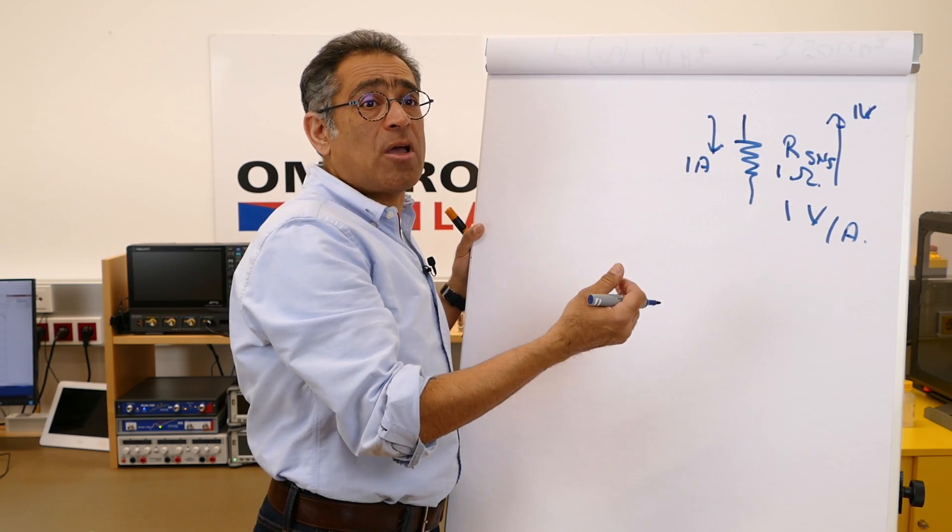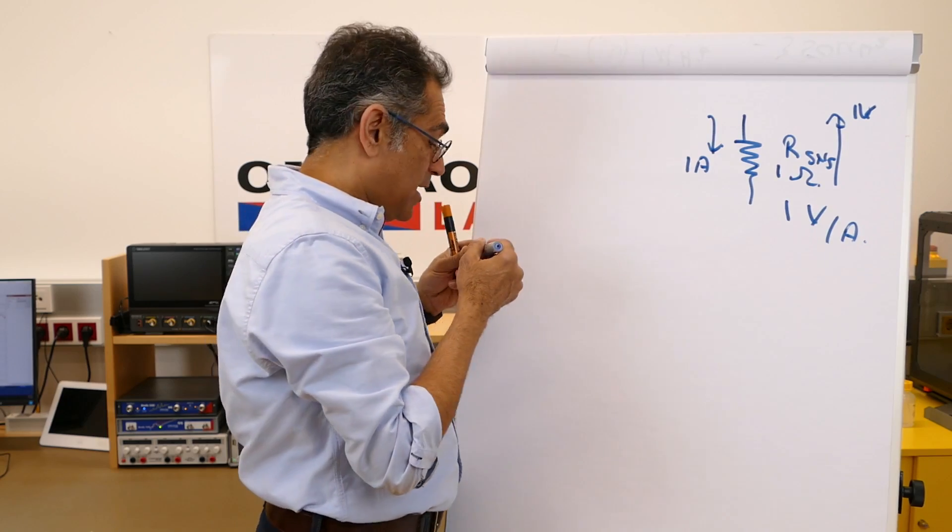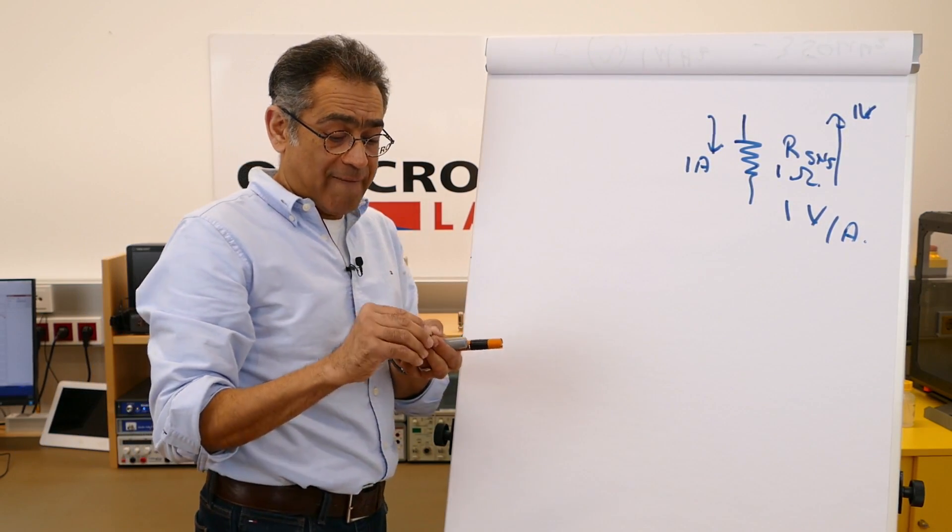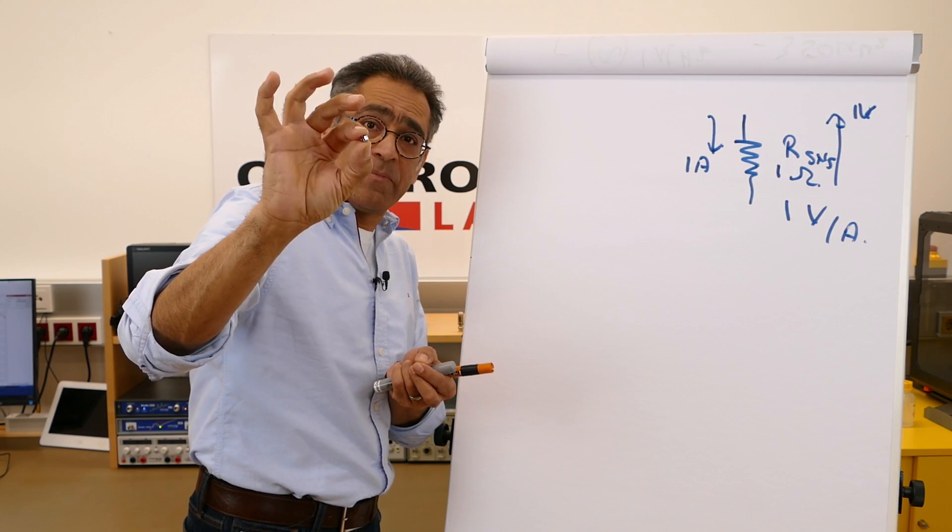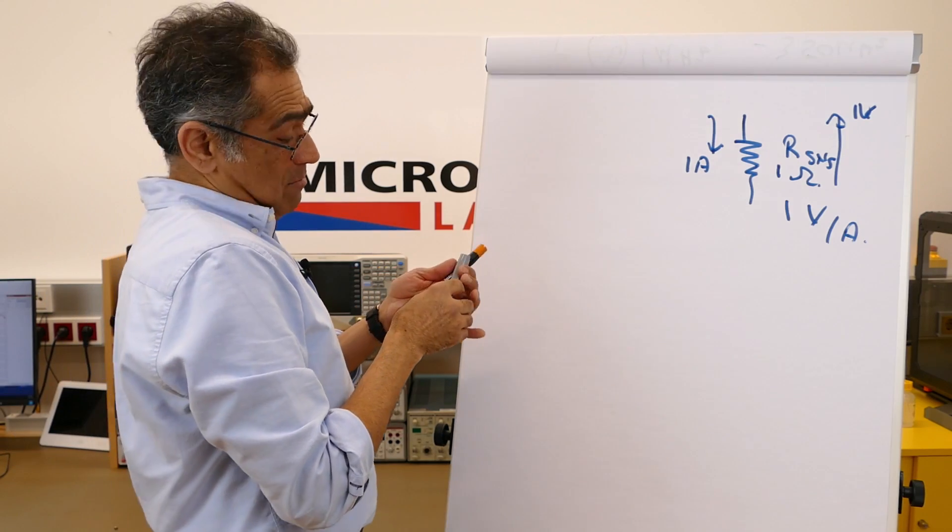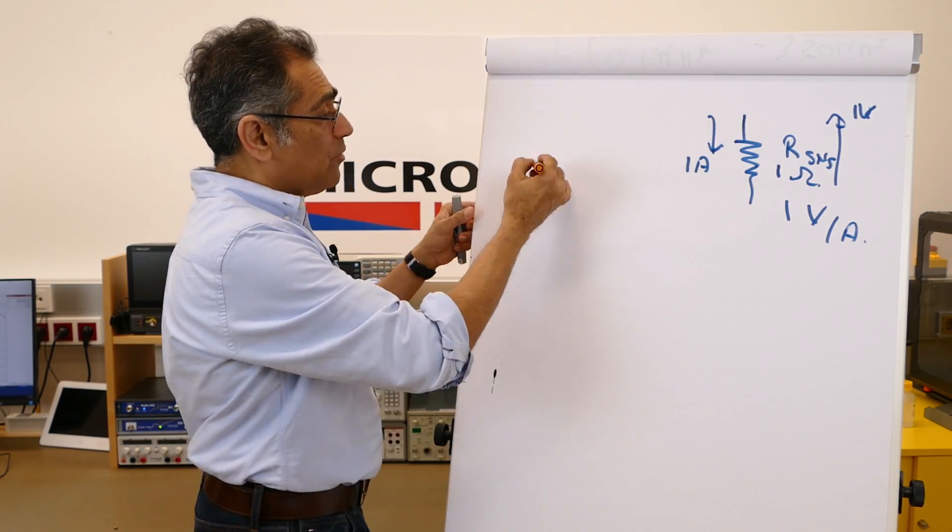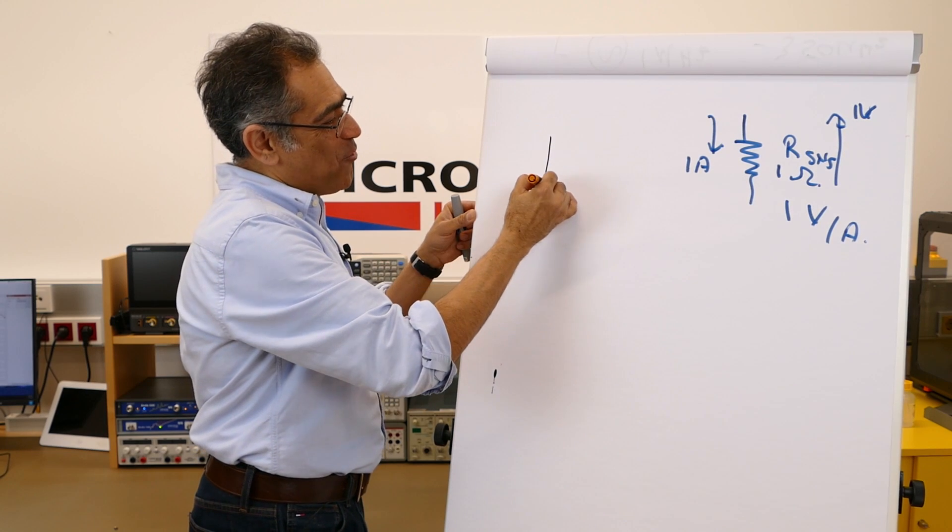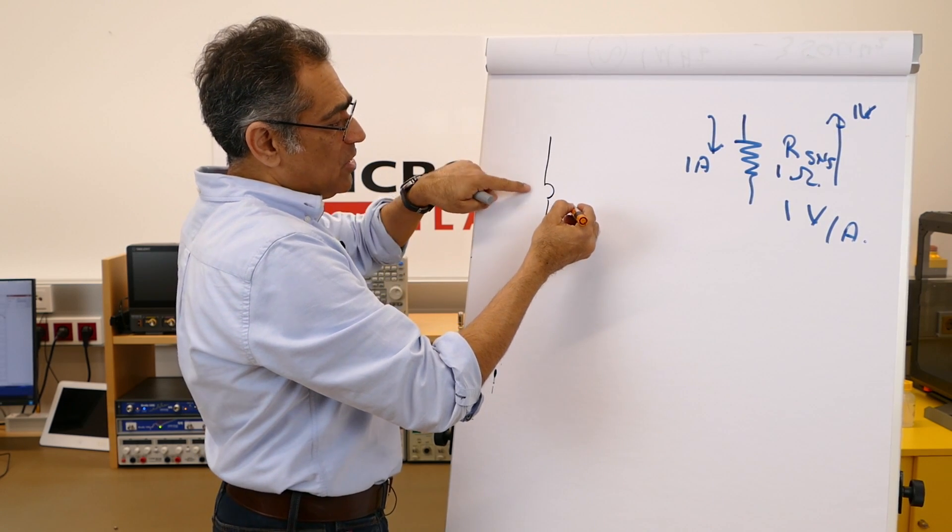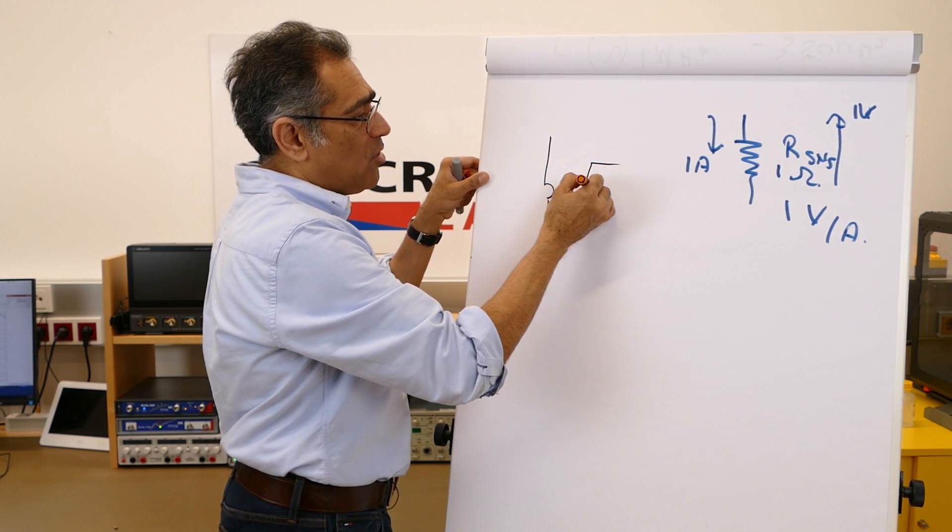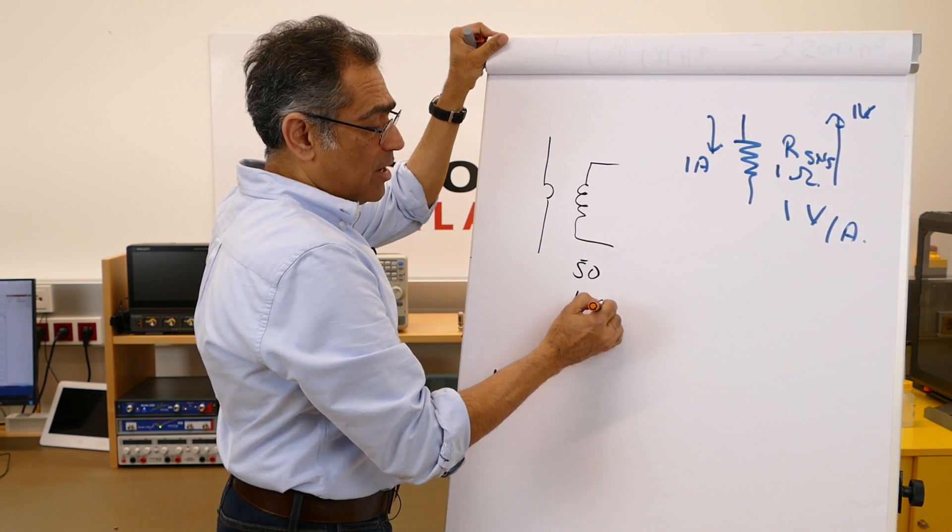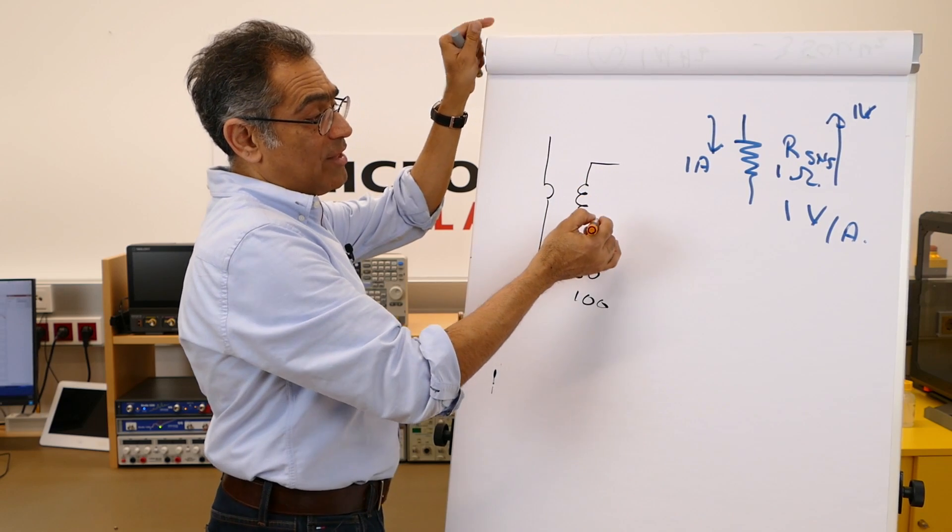And that is why we use something called a current sense transformer. It looks typically something like this and effectively is a transformer. You usually have one turn on the primary, that is just a track of your PCB goes to a transformer, and then you have got let's say between typically 50 or 100 turns on the secondary.